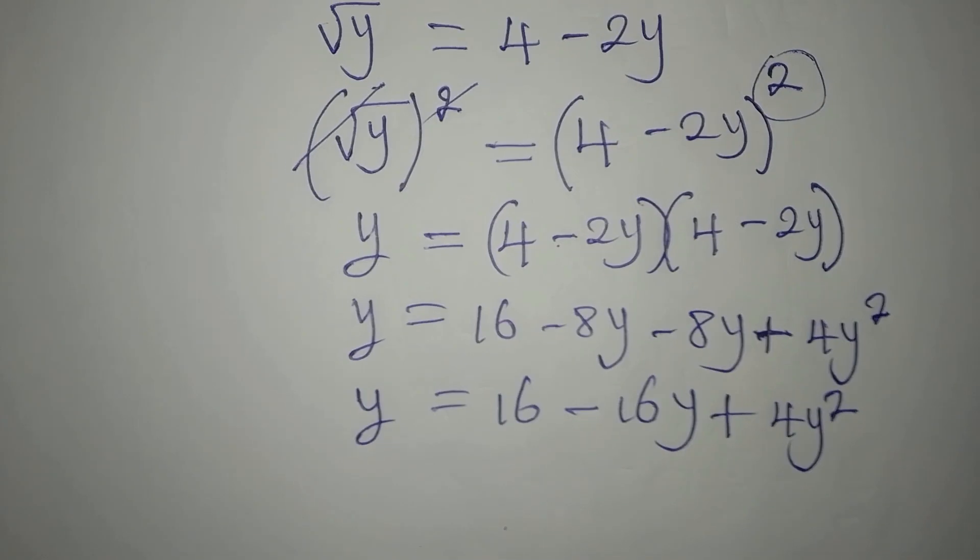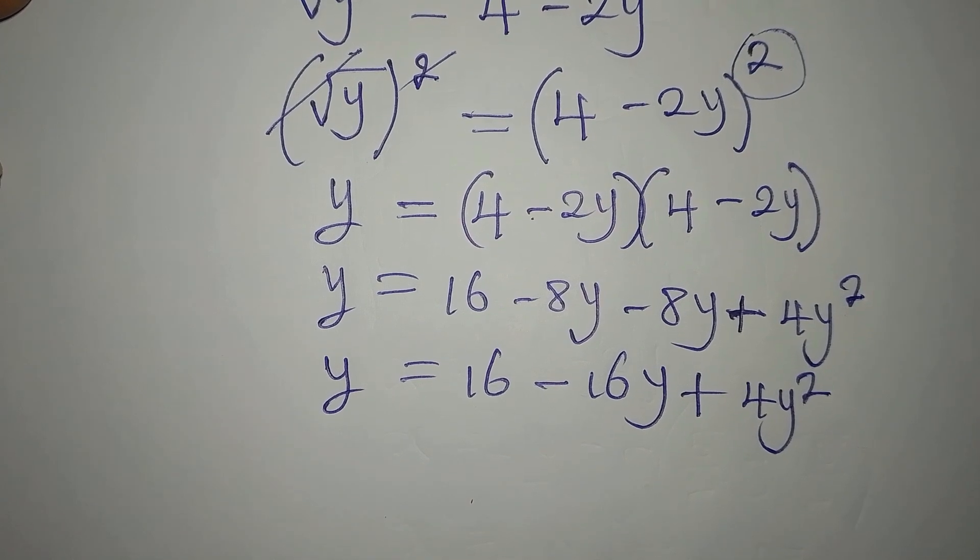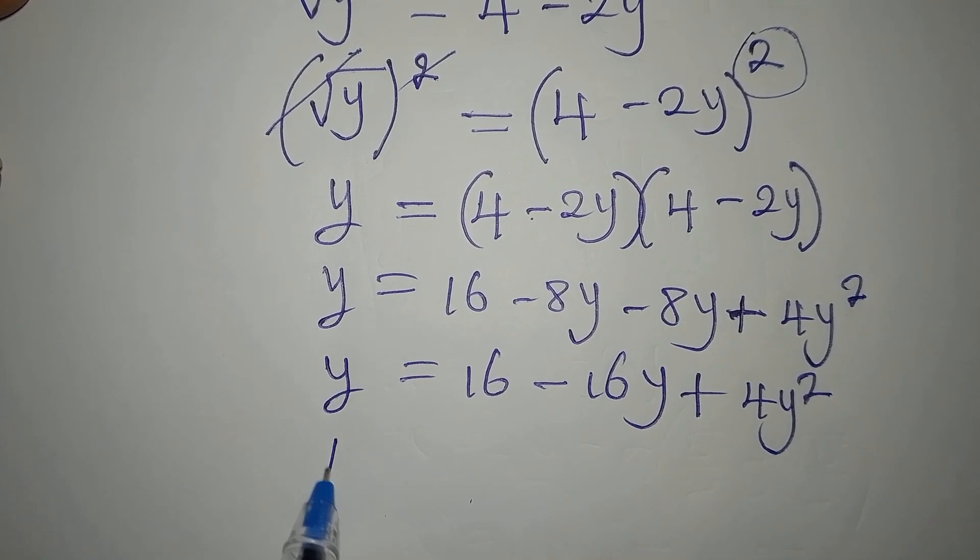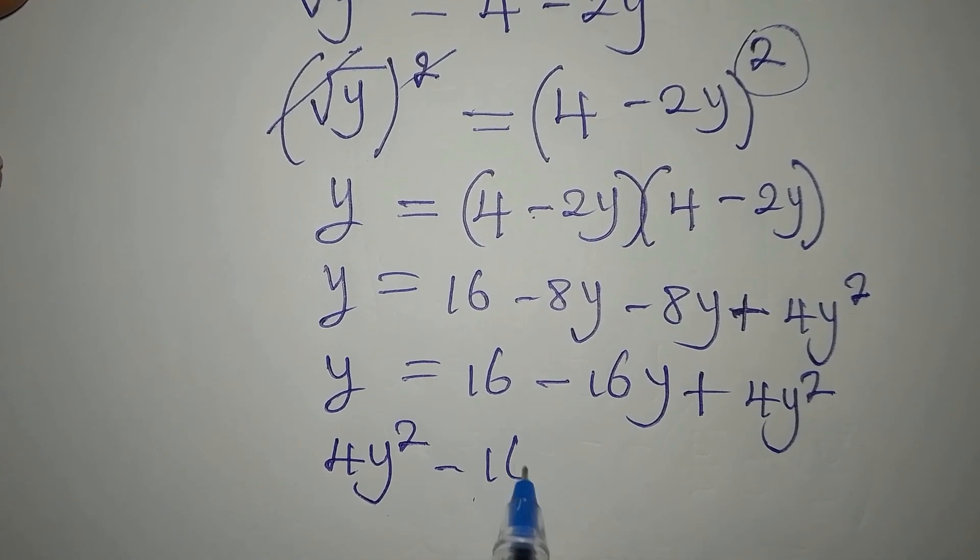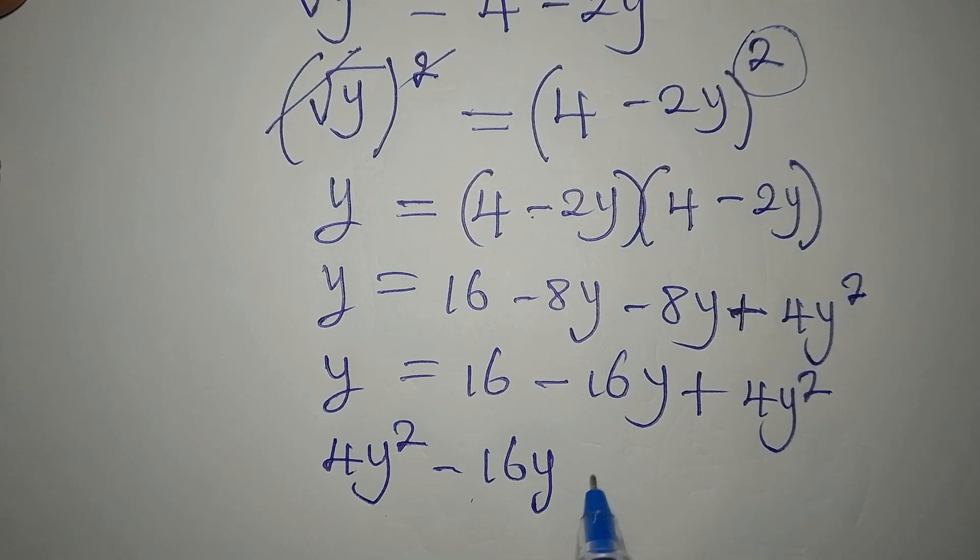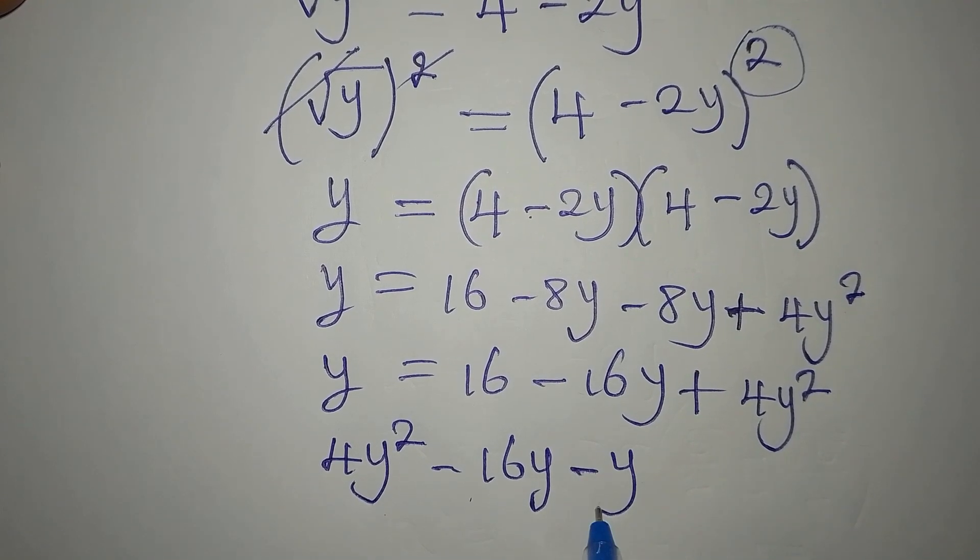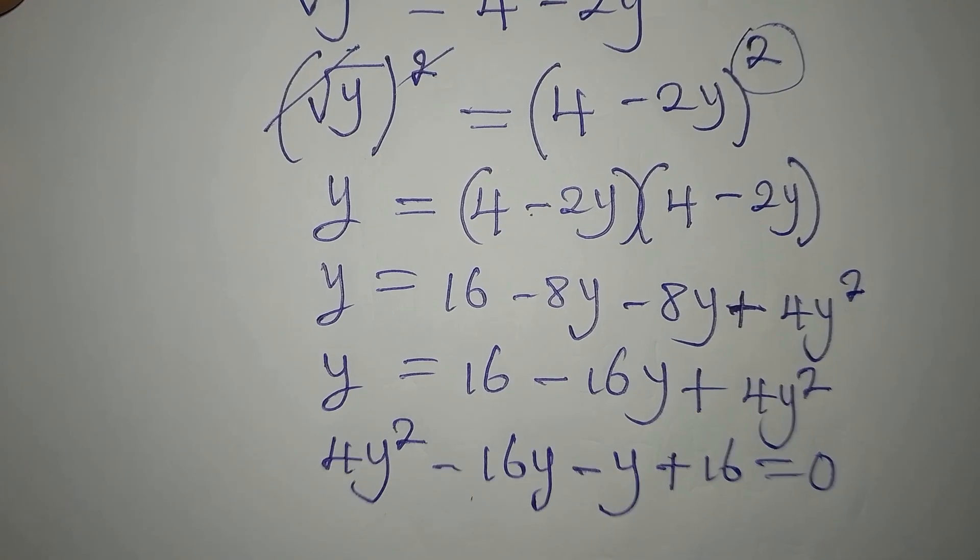Now let us rearrange what we have. I will write this: 4y squared will come first, this minus 16y will follow, this y is going to meet the others on the same side so it becomes minus y, but 16 is still with the others so we have our plus 16, then everything equals 0.